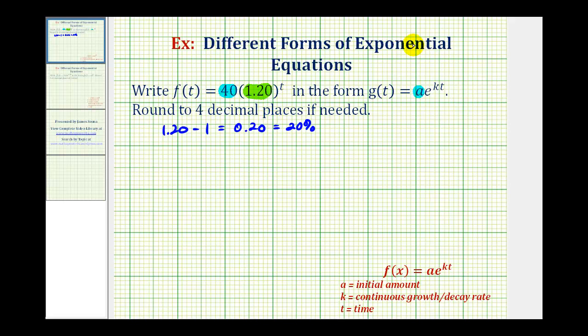But in g(t), k represents the continuous growth rate, which will not be the same as the growth rate per unit of time. To do this conversion, we're going to find two points on f and use those to find g(t).